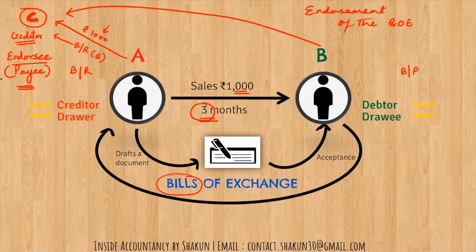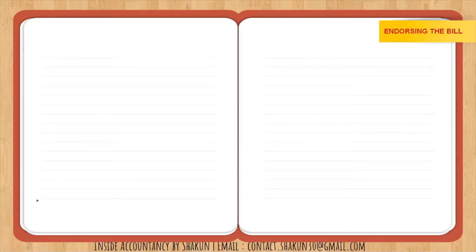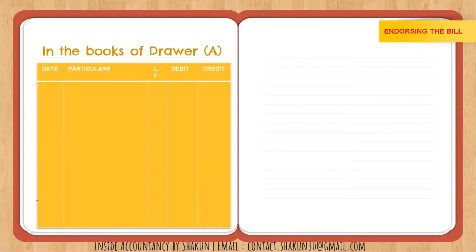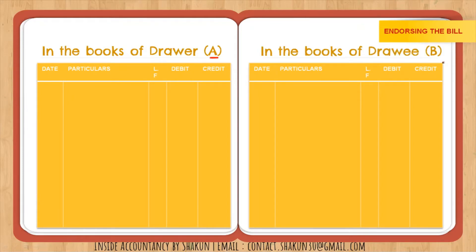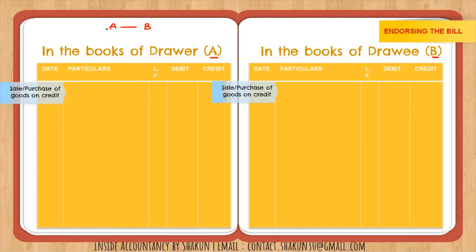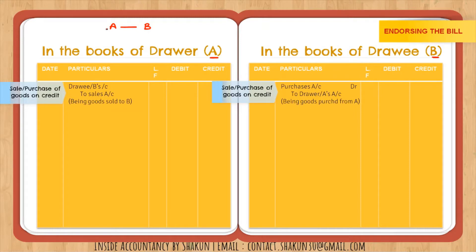Now let's look at the journal entries for endorsement. We pass entries in the books of the drawer (A) and the drawee (B). First entry: A sold goods to B. In the books of the drawer, B's account is debited and Sales account is credited. In the books of the drawee, Purchases account is debited and A's account is credited.